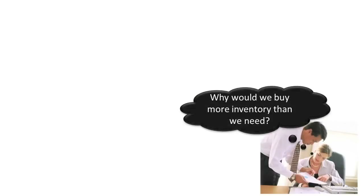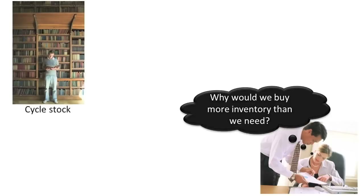Many successful businesses purposely choose to hold more inventory than is immediately needed for one or more of the following reasons. Cycle stock: management repurchases additional inventory based on a given reorder point. For example, some companies draw a red line on the product shelf and reorder whenever inventory drops below that line. Others use sophisticated and automated just-in-time reordering systems.